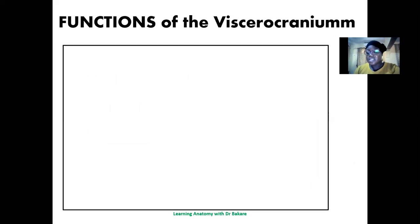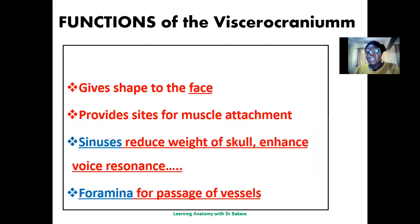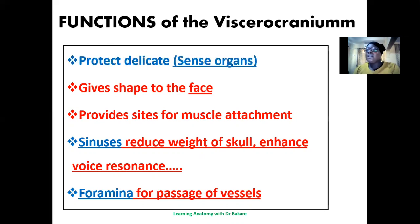The functions of the viscerocranium: they give shape to the face. They also create sites of attachment for muscles, as we've discussed also for the neurocranium. They contain sinuses, which help to reduce the weight of the skull and enhance the resonation of sound. They also contain foramina, which are for the passage of vessels, and they help to protect delicate organs such as the sense organs.